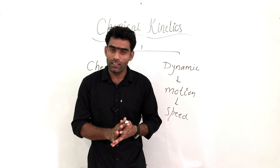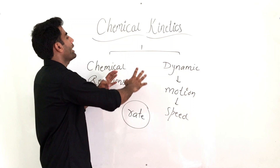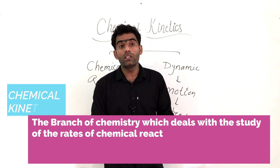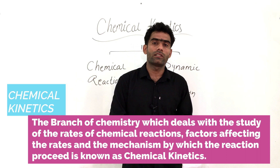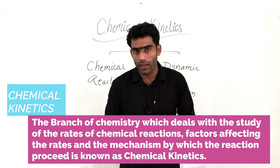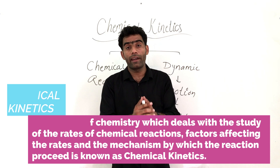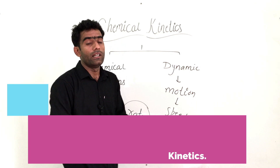So that was the word meaning of chemical kinetics. Now we can define chemical kinetics: Chemical kinetics is the branch of chemistry which deals with the study of rate of a chemical reaction, factors affecting the rates, and the mechanism by which the reaction proceeds. This is the definition of chemical kinetics.